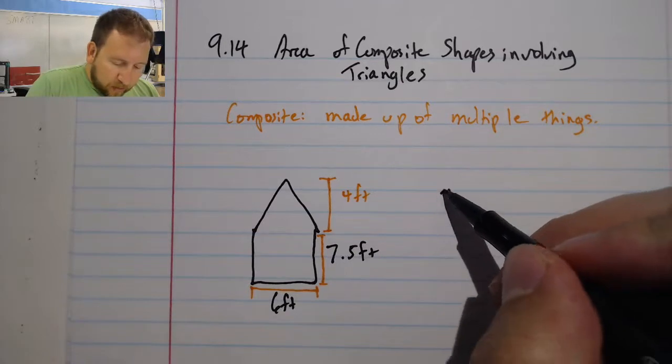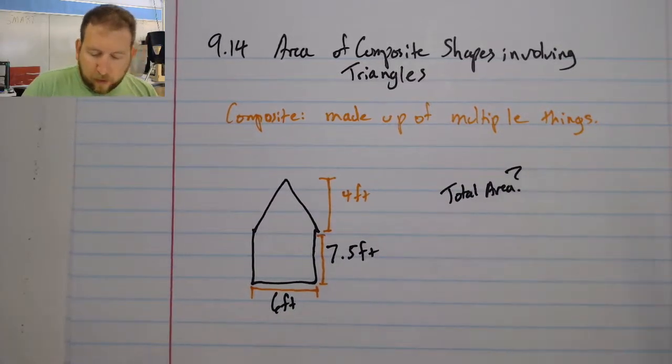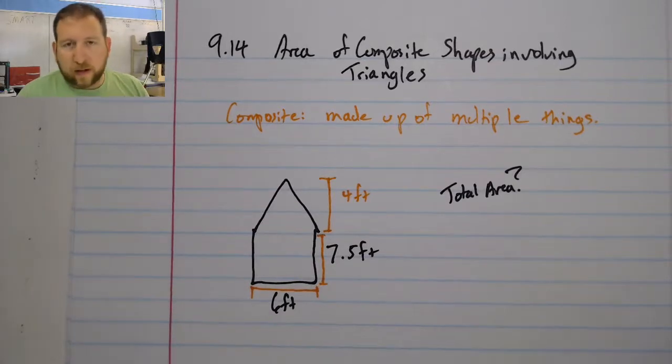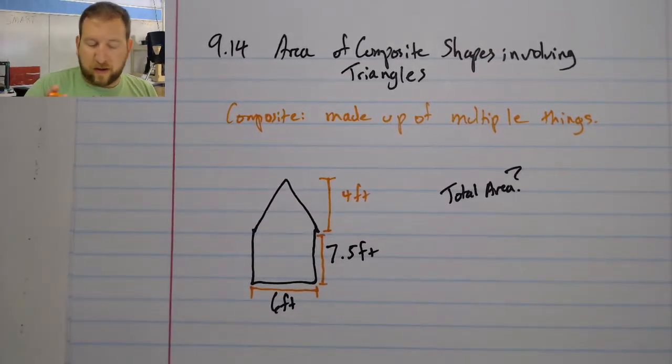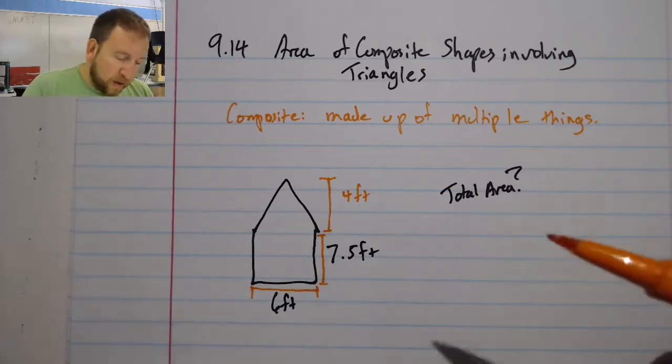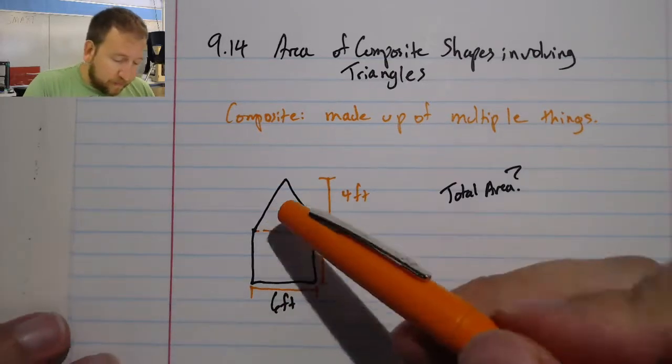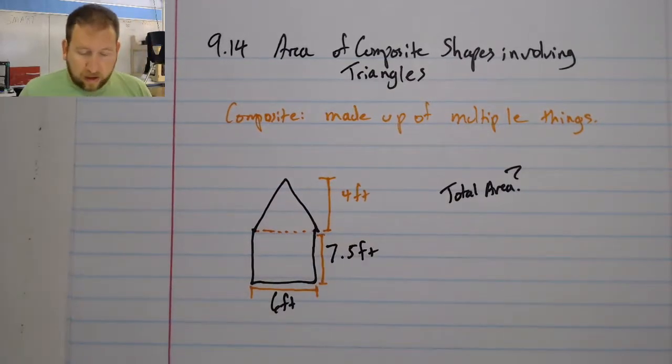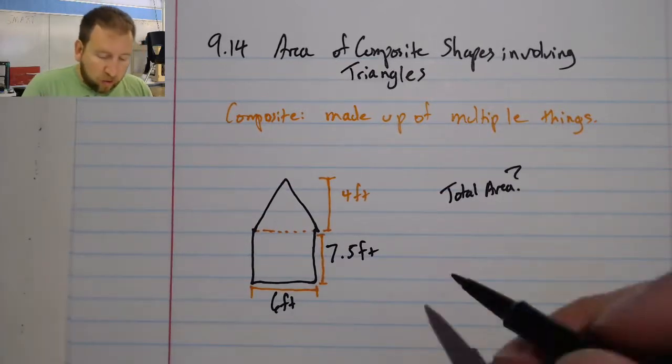The question is, what is the total area? Well, all that we're going to be doing in this section is we're going to be finding shapes like this, and we're going to be breaking them up into their smaller pieces. So for example, here I can see that I can just draw a dotted line over, and now I have a triangle and a rectangle.